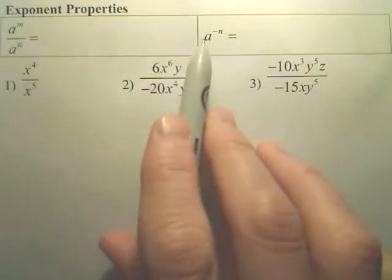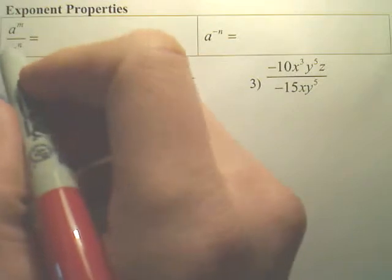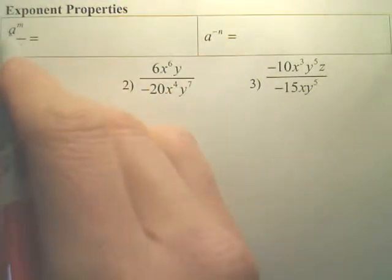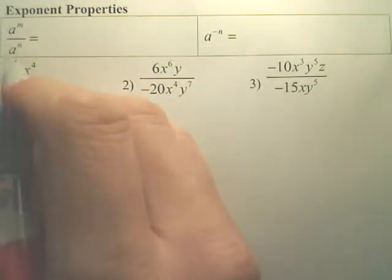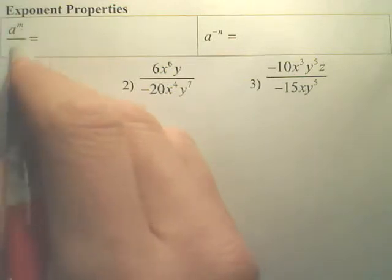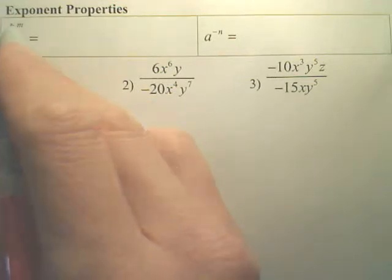Exponent properties. These are rational exponent properties. Rational means ratio. Whenever you have exponents where you have the same base but different powers and you're dividing,